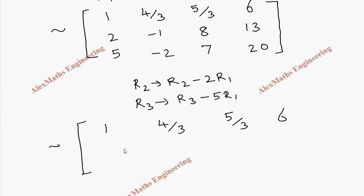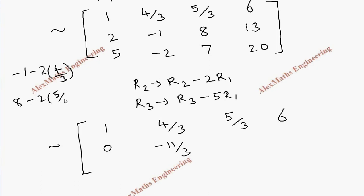So the matrix becomes: first row 1, 4/3, 5/3, 6 written as it is. New R2: 0, then -1 minus 2×(4/3) = -11/3, then 8 minus 2×(5/3) = 14/3, then 13 minus 2×6 = 1.